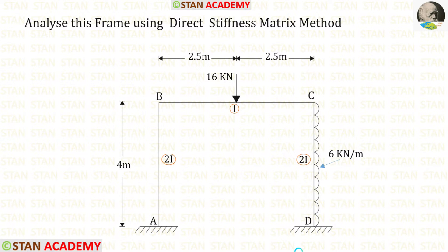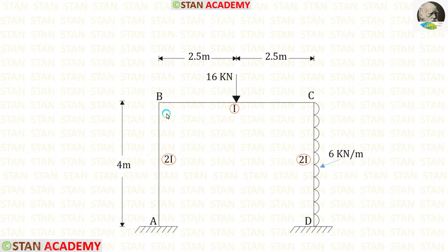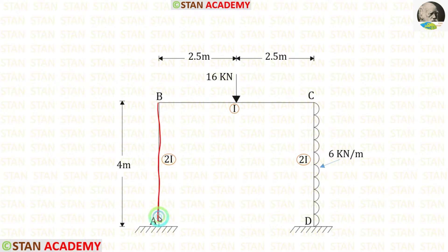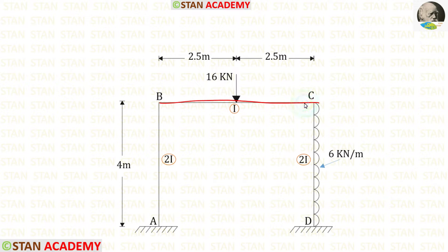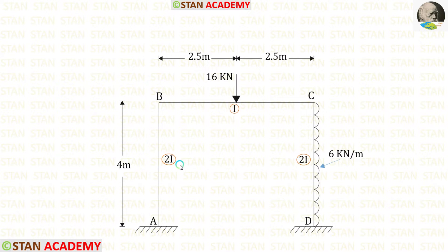Hello everyone. Today we are going to analyze this frame using the direct stiffness matrix method. In this frame, we have columns AB and CD, and beam BC. In column AB there is no load. In column CD, we have a uniformly distributed load of 6 kN per meter acting towards the left side. In beam BC, we have a point load of 16 kN. The moment of inertia for the columns is 2I and for the beam it is I.